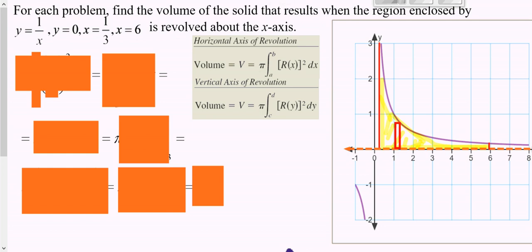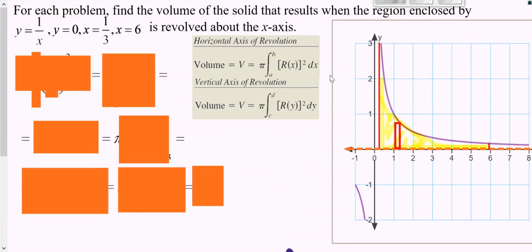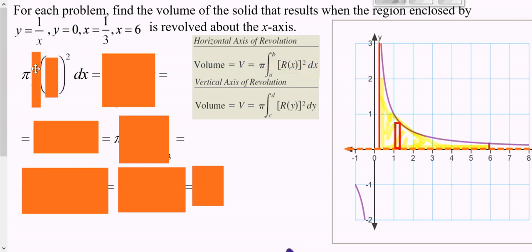That's the shape we are revolving around the x-axis, and if we revolve it we get a shape similar to this. It's a horizontal axis of revolution so we're dealing with x's. Put pi in front, your bounds are how far left and right you go — from a third all the way to six. Your radius goes from the top down to the bottom, which is your function minus zero, which is just your function.